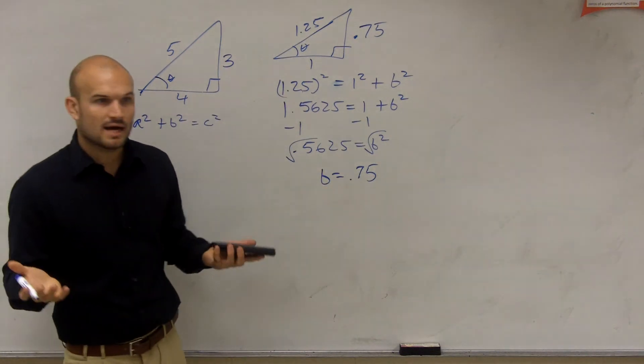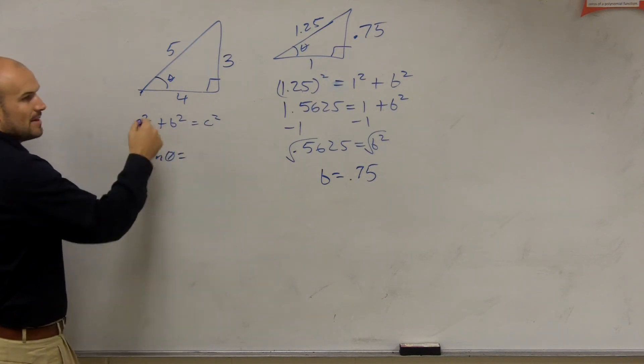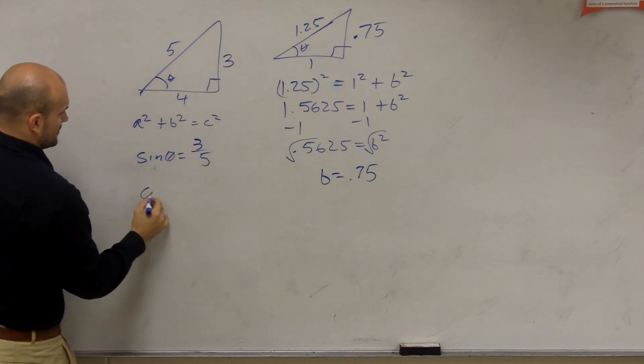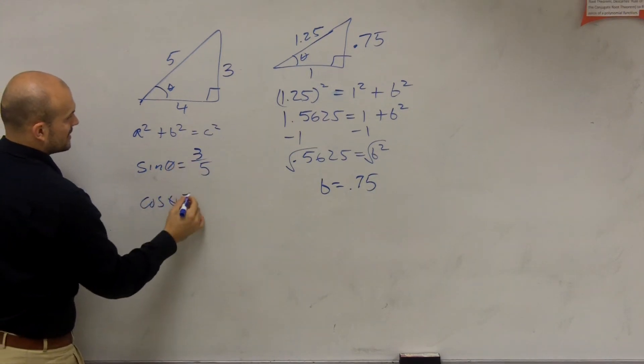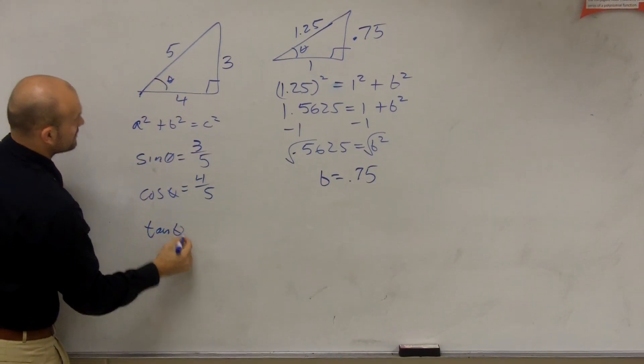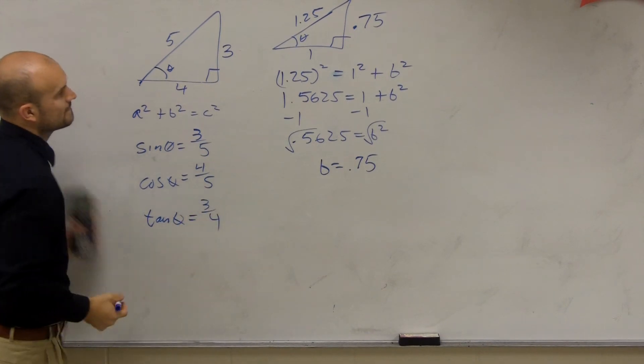So now, let's go and take a look at our function. So remember, sine of theta is opposite over hypotenuse, which is three-fifths. Cosine of theta is equal to 4 over 5, adjacent over hypotenuse. And tangent of theta is opposite over adjacent, which would be 3 over 4.